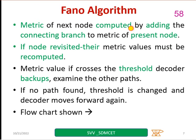Matrix of the next node is computed by adding the connecting branches matrix. We had done this in Viterbi algorithm also. Previous matrix we consider before we calculate for a present node. If node is revisited, we had to recalculate. And if no path is found and if threshold is changed, if a path is not found, in the beginning we are fixing a threshold and we are trying. If you want to get it, we change the threshold.